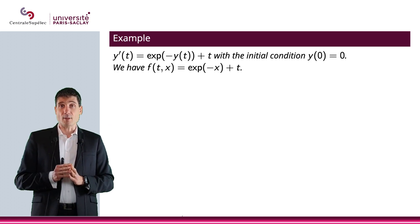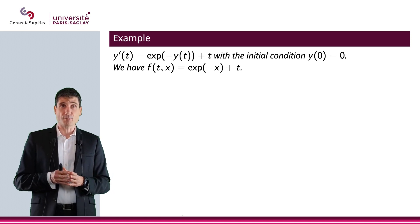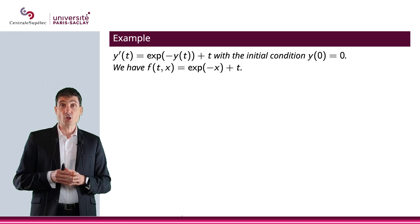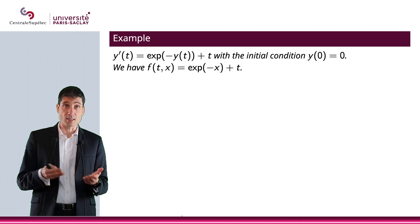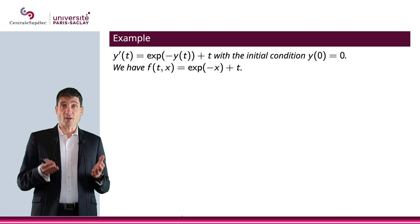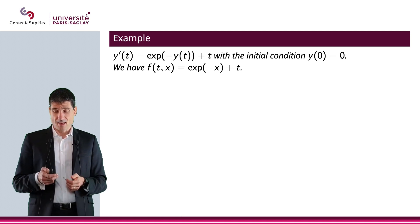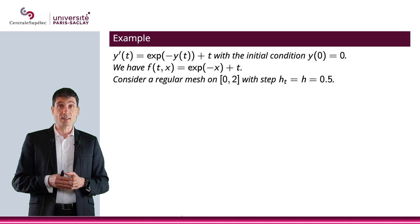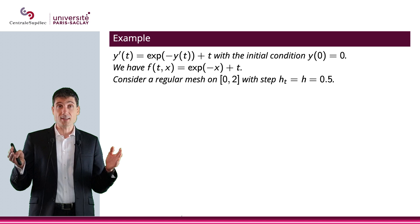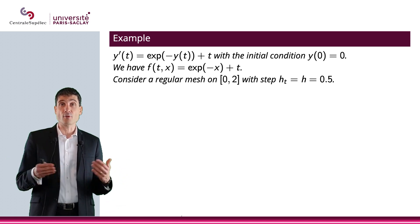Let me give you an example immediately, and you will understand this Euler forward method. y' of t equals exponential minus y of t plus t will be our ODE, and the initial condition will be y of 0 equals 0. So t0 equals 0, and y0 is equal to 0. Of course, the function f is going to be f of tx equals exponential minus x plus t.